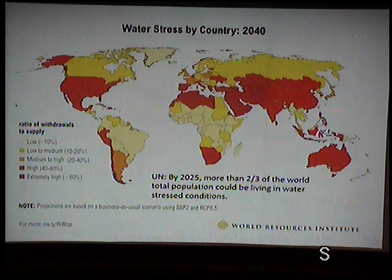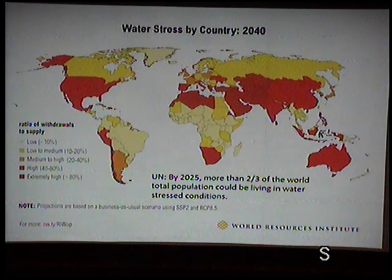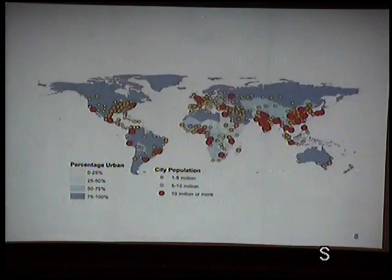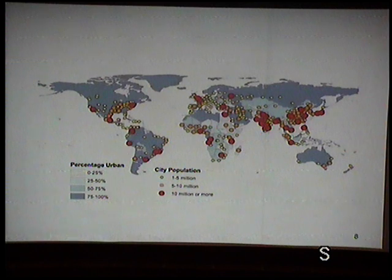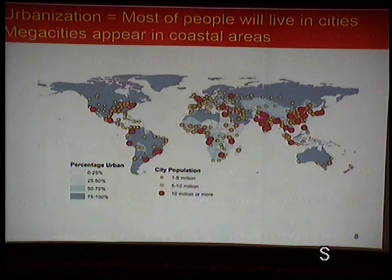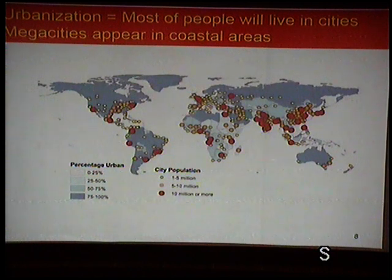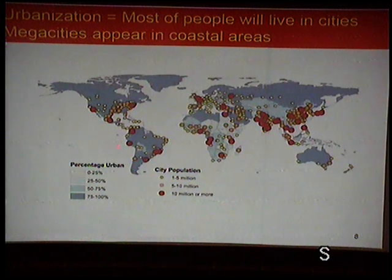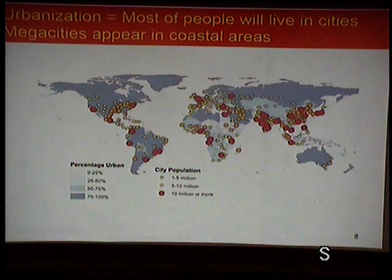A UN water stress map shows India, China, Australia, and everywhere experiencing water shortage. The most important water stress always happens in coastal areas because of urbanization. India still has its biggest cities inland, but very soon — like Australia — the biggest cities will be coastal. Red dots on the map show mega cities all near coastal areas.